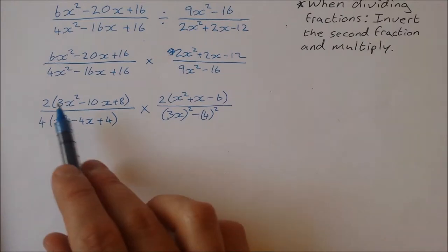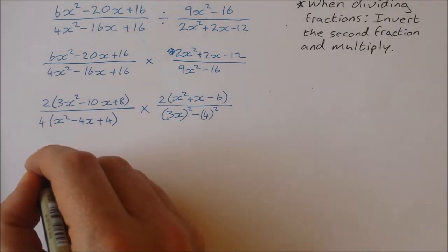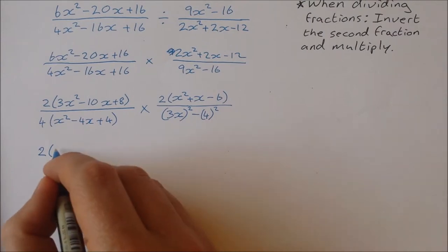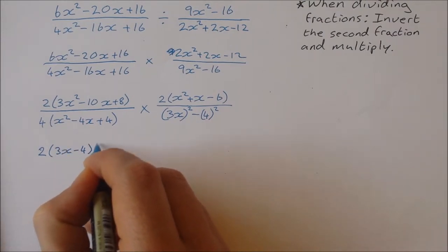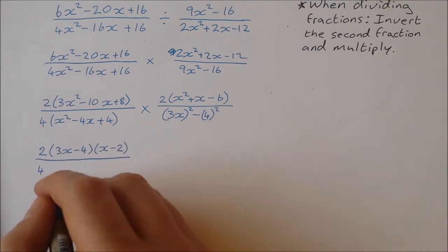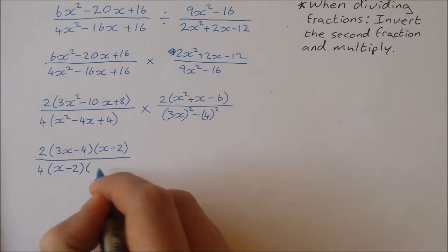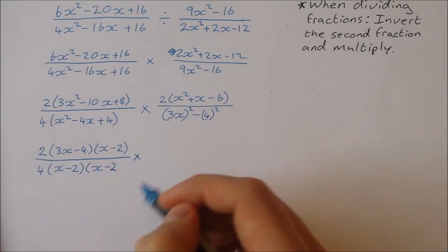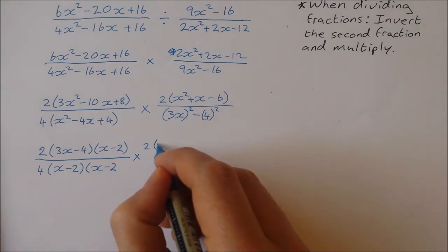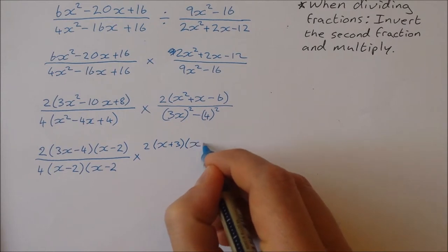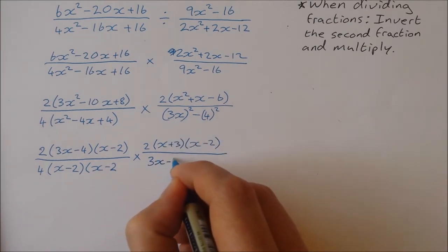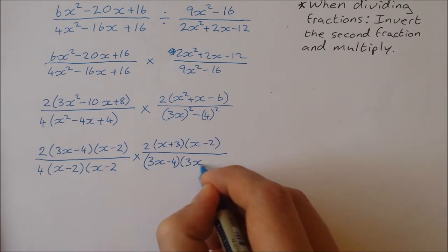There's more factorizing I can do — I can factorize each of these quadratic trinomials. So I get 2 times (3x minus 4)(x minus 2). On the bottom, x squared minus 4x plus 4 factorizes as (x minus 2)(x minus 2). This multiplies by 2 times (x plus 3)(x minus 2) from factorizing x squared plus x minus 6. On the bottom, the difference of two squares gives (3x minus 4)(3x plus 4).